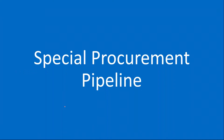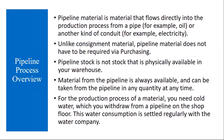First we will start with the pipeline process — special procurement pipeline. Pipeline material is a material that flows directly into the production process from a pipe or from another kind of conduit. Pipeline material means the material which flows continuously and directly, like oil or electricity. In manufacturing companies, to produce products, they need electricity, water, or gases — all these things come under pipeline, supplied via pipe continuously.